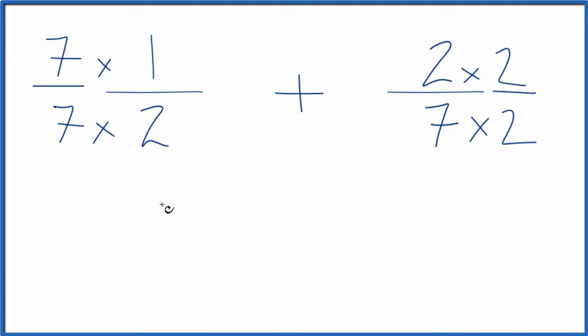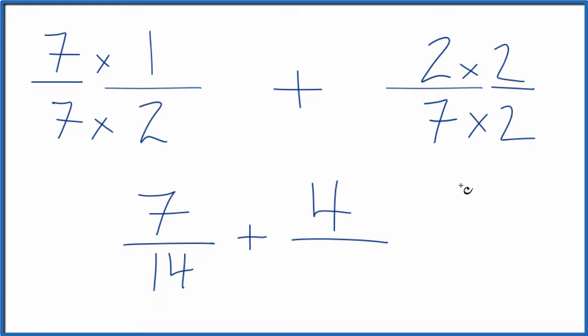Now we have 7 times 1. That's 7. 7 times 2 is 14, plus 2 times 2 is 4, and 7 times 2, that's 14.